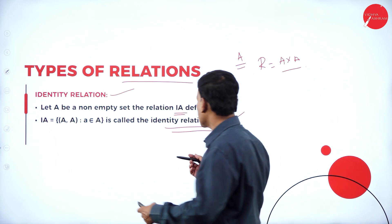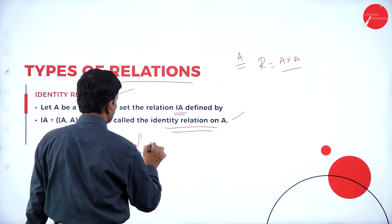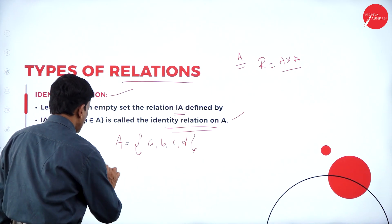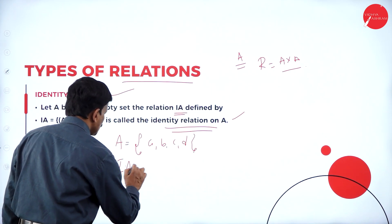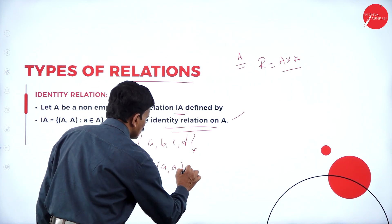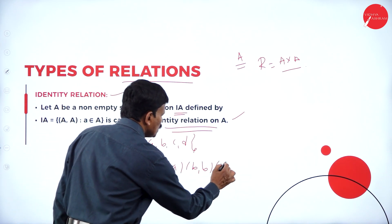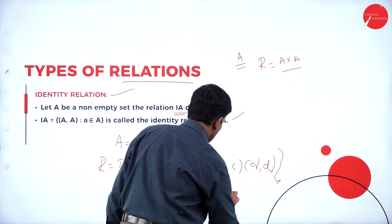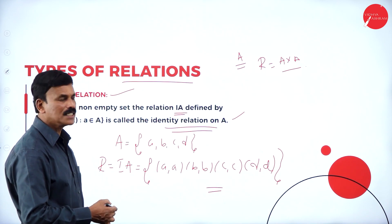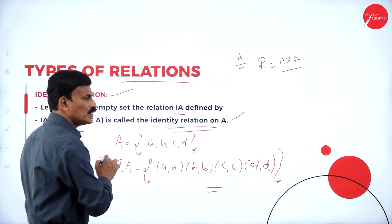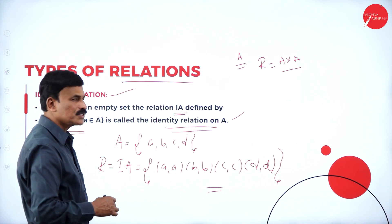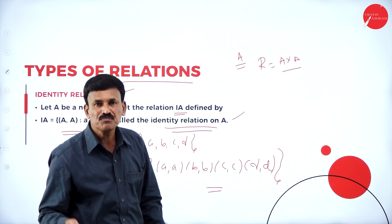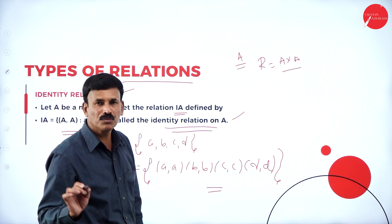For example, on the set A = {a, b, c, d}, the relation R is defined as an identity relation on A if {(a,a), (b,b), (c,c), (d,d)} belongs to R. This is an example for an identity relation. Hope you followed.